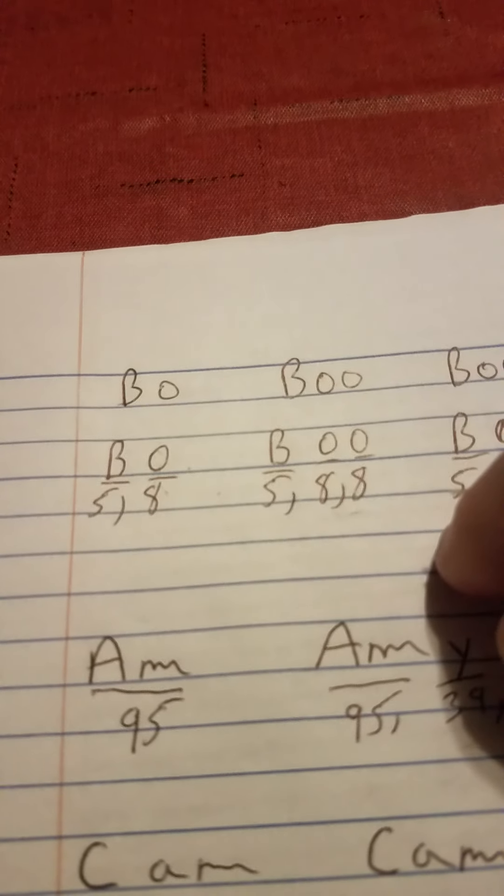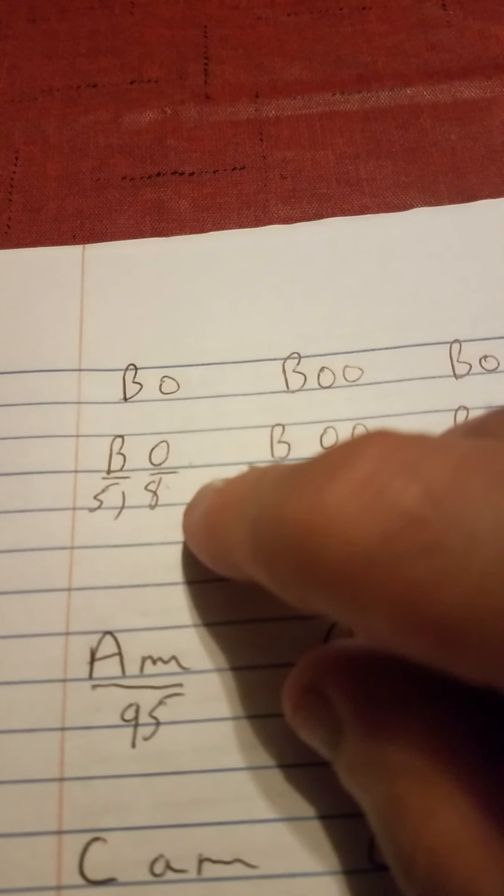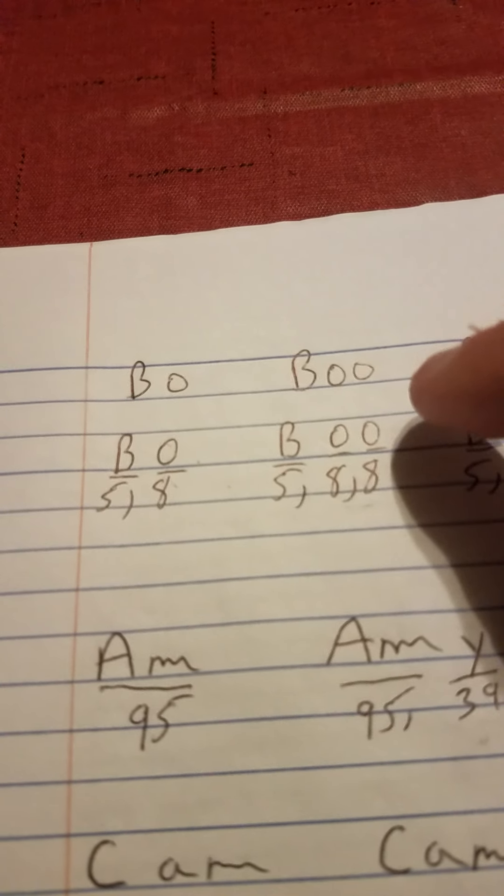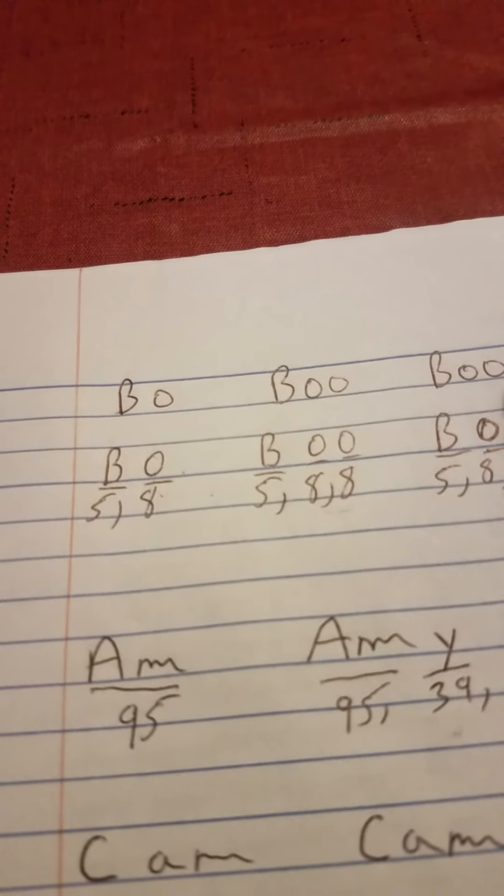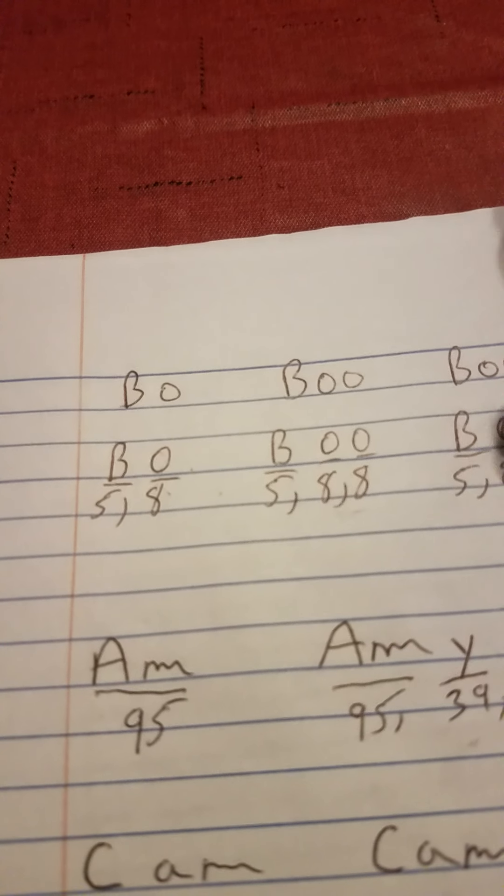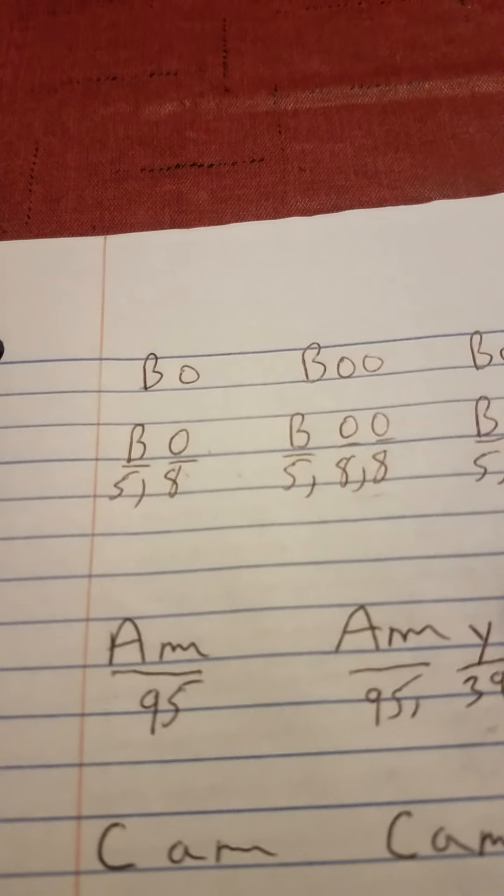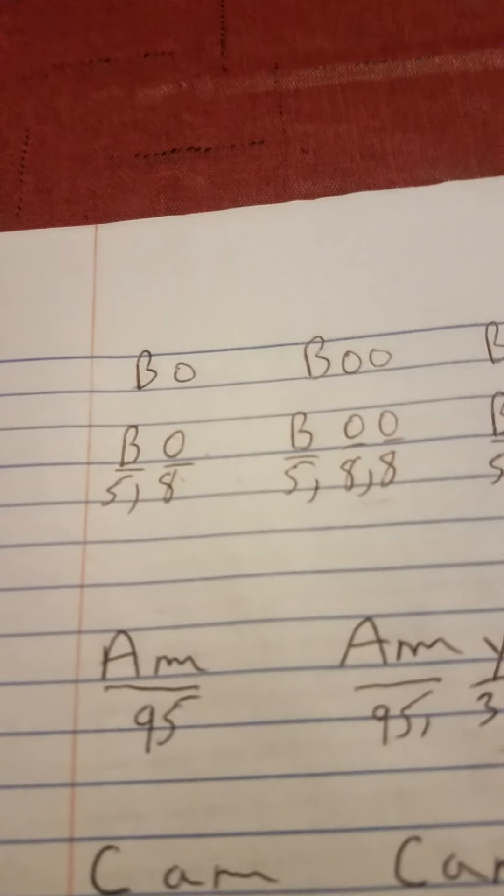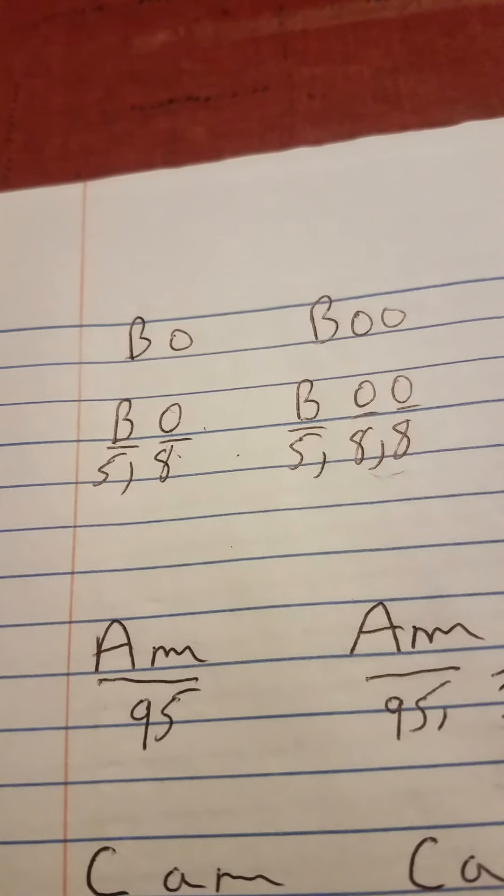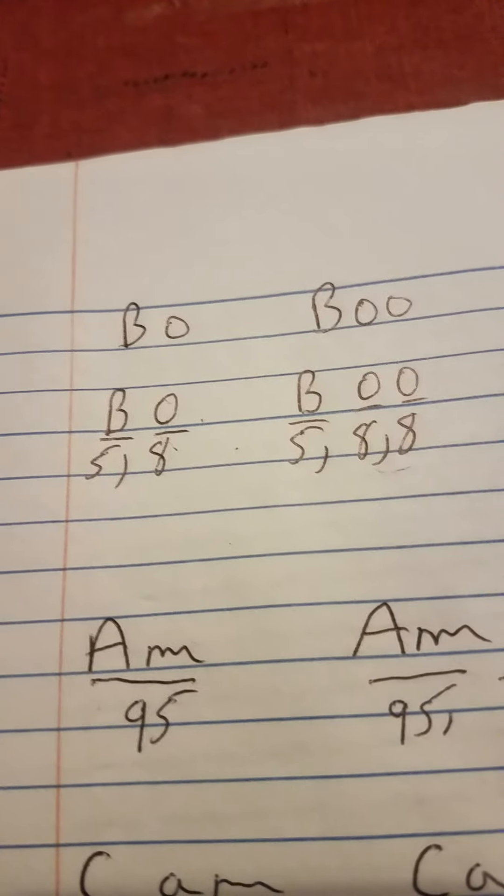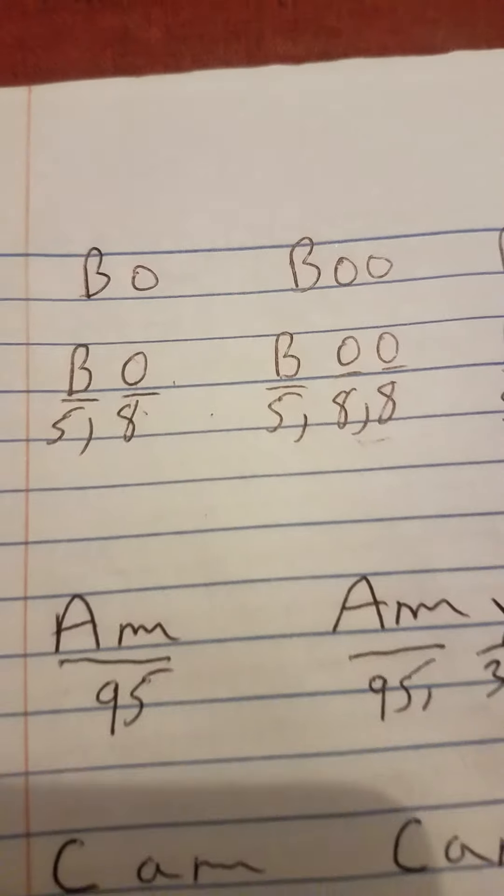So you got five and eight. Now I add another O or another eight and you got boo, like boo. I'm scaring you. All I got to do is put another O, another oxygen, and there's the eight. Two eights. Five, eight, eight. See atomic number?